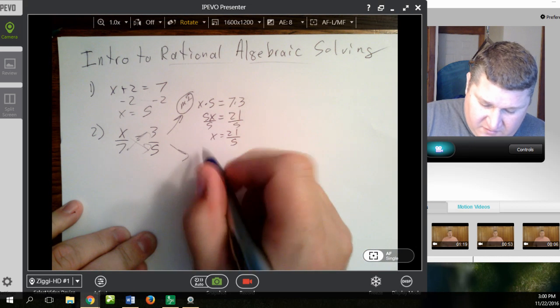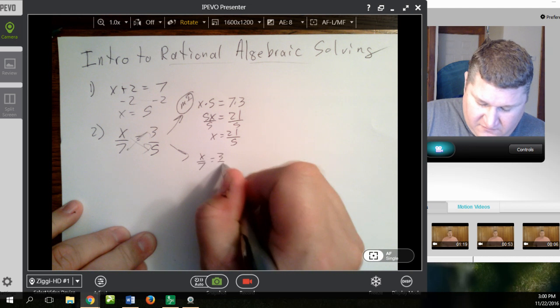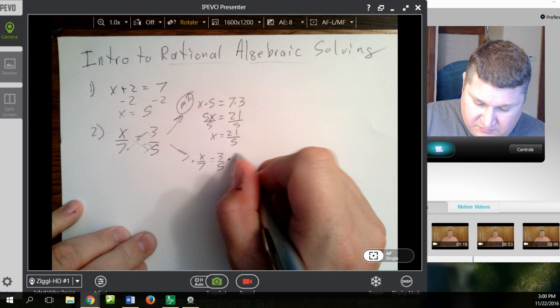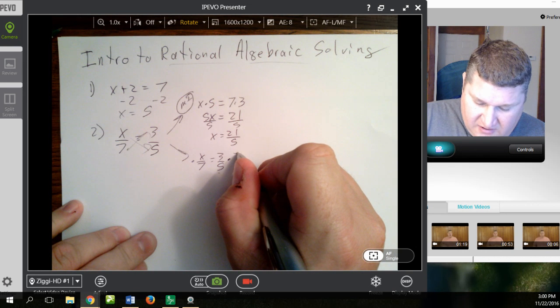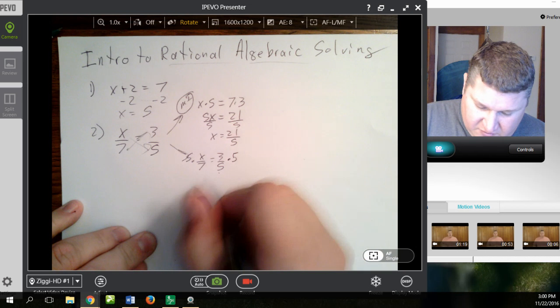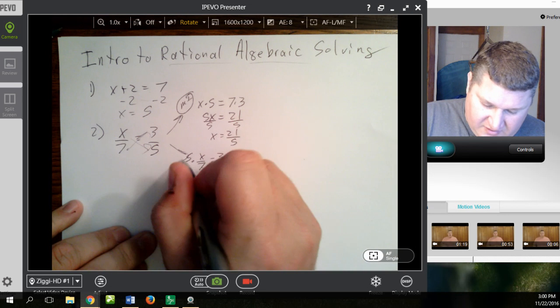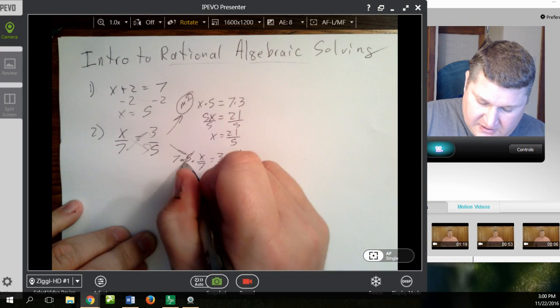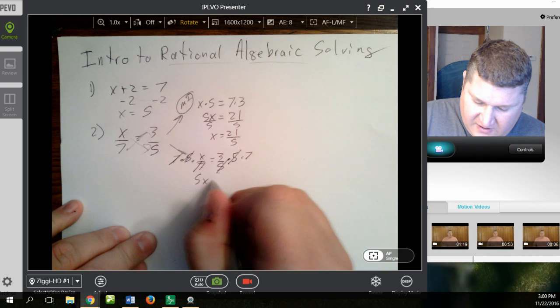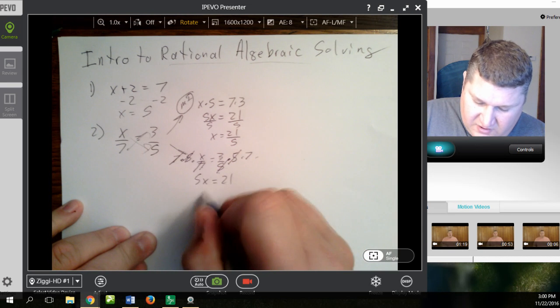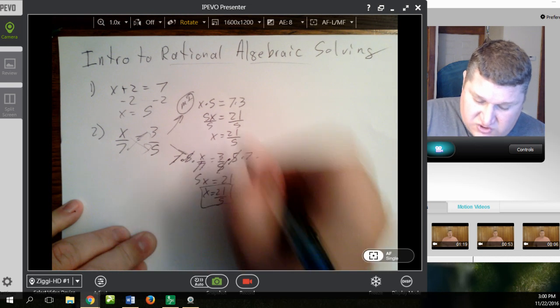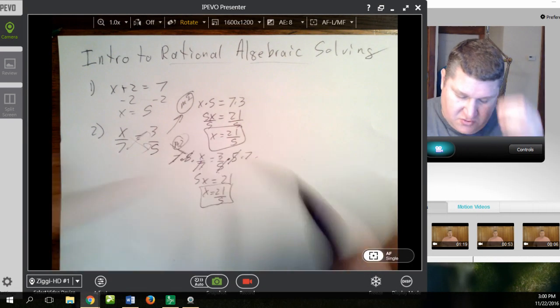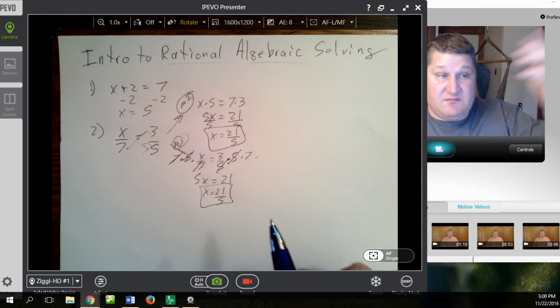The alternative would be if I have x over 7 equals 3 over 5, do each piece separately. Since this is divided by 5, let's multiply by 5, multiply by 5. So you have, this is divided by 7, so let's multiply both sides by 7. Here and here cancel out. Here and here cancel out, leaving 5x equals 21, x equals 21 over 5. So whether I do it by cross-multiply, or whether I do it using method number 2, which is traditional solving, makes no difference.